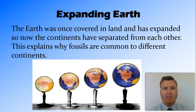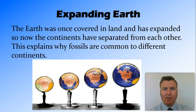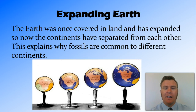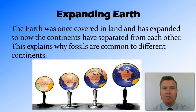Another theory at the time was the expanding earth theory — the exact opposite. Rather than contracting, the earth is expanding because over time gravity is pulling rocks and things out of space that come down as meteorites, so the earth is getting bigger. The theory goes that originally the earth was totally covered in land, but as it expanded those land masses broke up and moved further apart, with oceans filling the gaps between them. This explains why the same sorts of fossils appear in different continents even though there's no land bridge to explain how animals got from one continent to another.